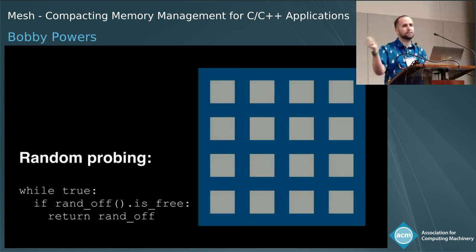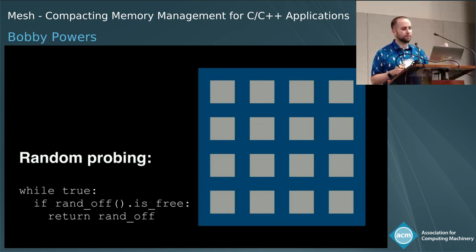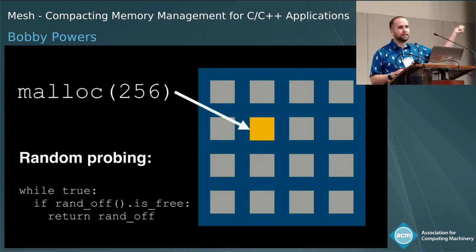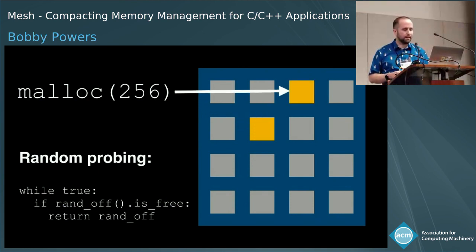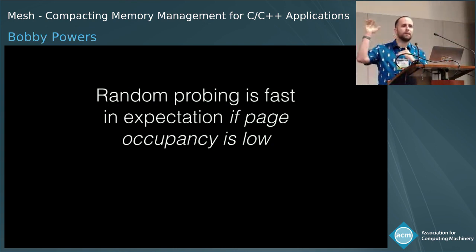This has been done in previous allocators, often for security-focused allocators. The typical approach is random probing: generate an offset, check if it's free, and if so return a pointer; otherwise try again. In expectation, this is quite fast as long as we keep occupancy below some threshold for these pages.